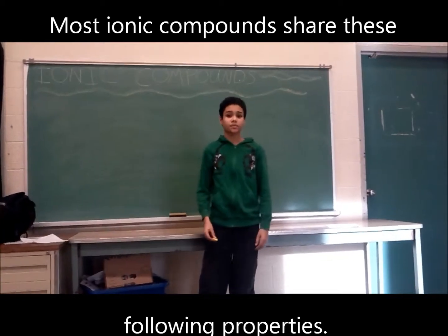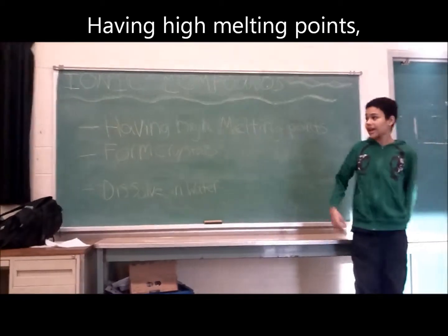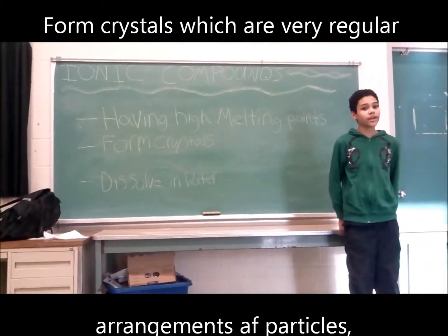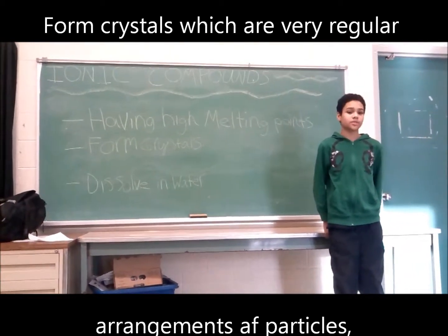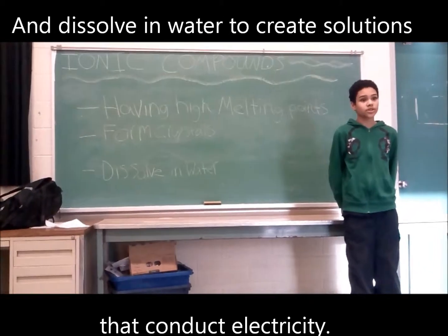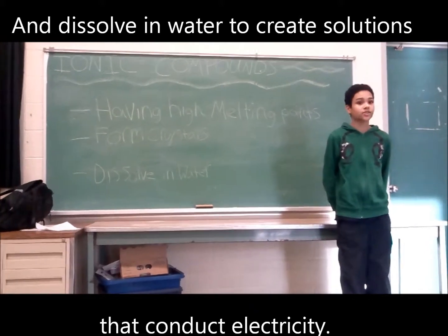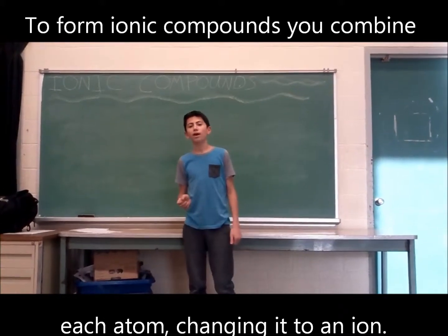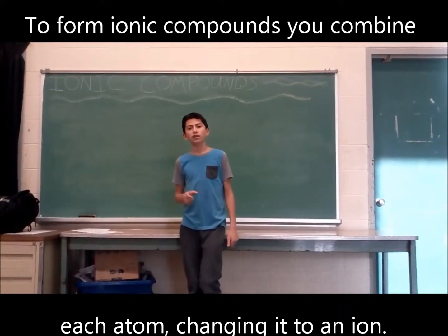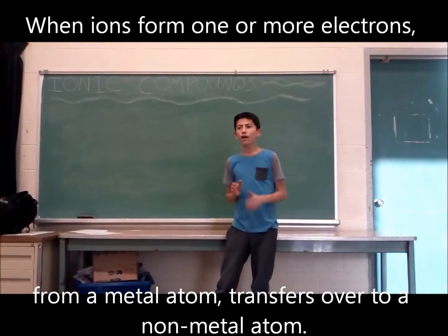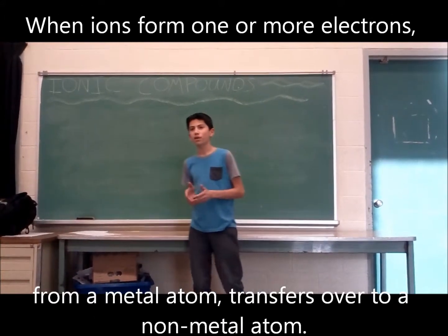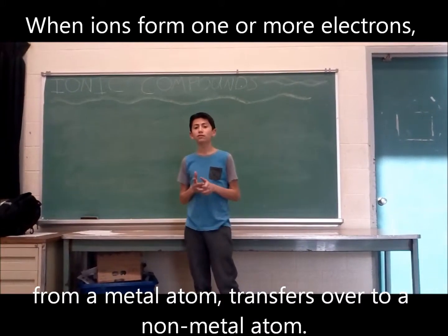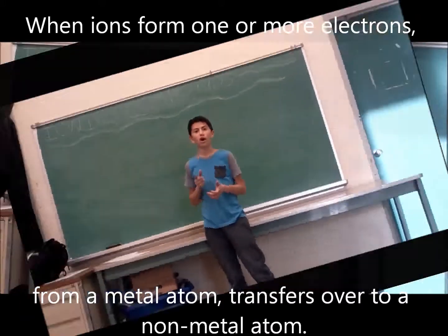Most ionic compounds share the following properties: having high melting points, forming crystals which are very regular arrangements of particles, and dissolving in water to create solutions that conduct electricity. To form ionic compounds, you combine each atom and change it into an ion. When ions form, one or more electrons from a metal atom transfers over to a nonmetal atom.